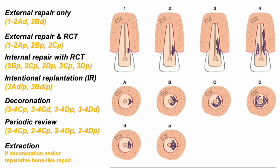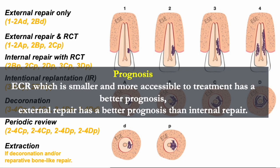For external cervical resorption, the etiology is poorly understood; orthodontic treatment and history of trauma are the most commonly associated factors. Hypoxia was recently proposed as a contributory factor by Marverde in 2019. However, all suggested etiological factors are considered only as predisposing or associated factors rather than causative. Management depends on the nature, extent, size of the portal of entry, and accessibility to the lesion, with treatment options including external repair only or with root canal treatment, internal repair with root canal treatment, intentional replantation, decoronation, periodic review, or extraction. All options are still considered experimental with outcomes typically short to medium term. Prognosis is better with smaller and more accessible cervical resorptions, and external repair has a better prognosis than internal repair.